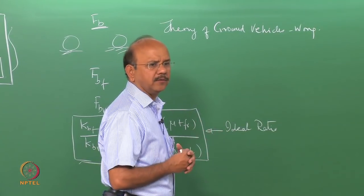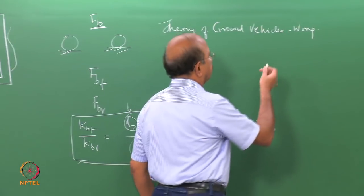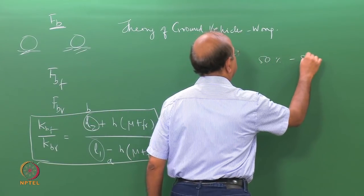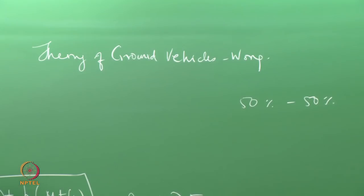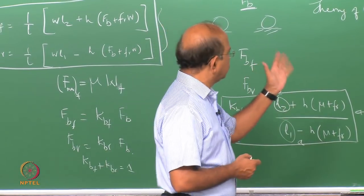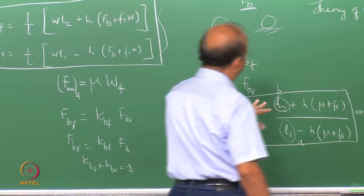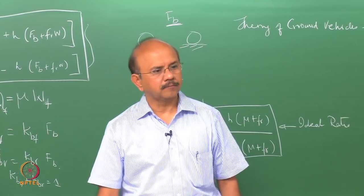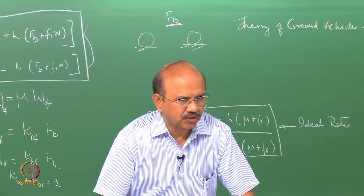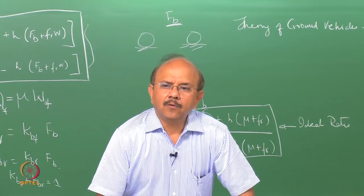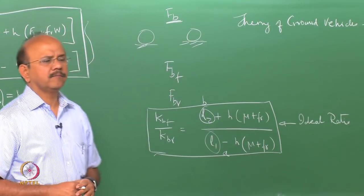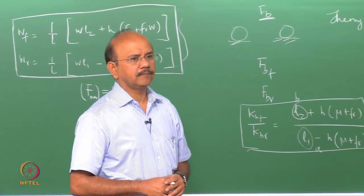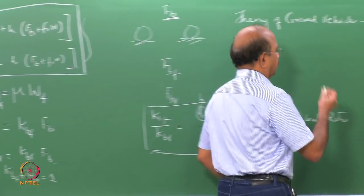It is a very difficult ratio to arrive at because the same vehicle will have a changing ideal ratio. What is actually used in practice? Many truck companies use 50/50, while some car companies use 47/53 and so on. It is a problem of fixing a ratio, because there is no single ideal value.